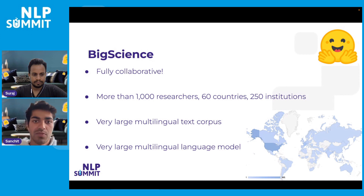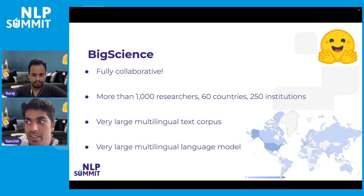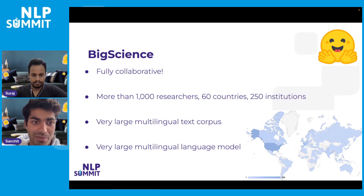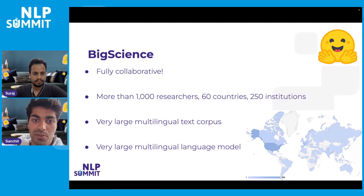Big Science involved over 1,000 researchers from 60 different countries and 250 institutions. The heat map in the bottom right shows the distribution of contributions — it's safe to say that Big Science is a truly global effort. The two deliverables of the Big Science project were a very large multilingual text corpus and a very large multilingual language model.